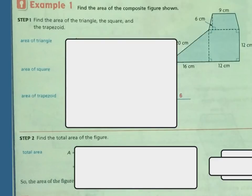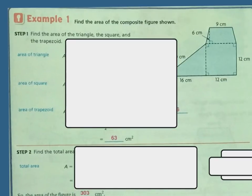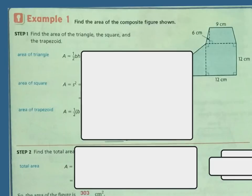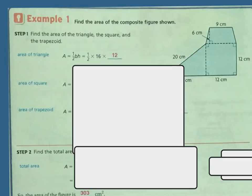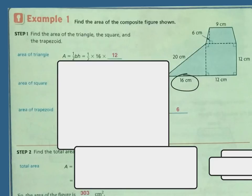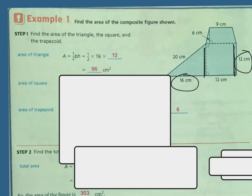Very similar to this one, we've got a basic shape with a square, a triangle, and a trapezoid. We need to find each area and then add them up. For the area of the triangle, the formula is base times height divided by 2. Looking over here, the base is 16 and the height is 12 — the same as this side — so 16 times 12 divided by 2 is 96 square centimeters.